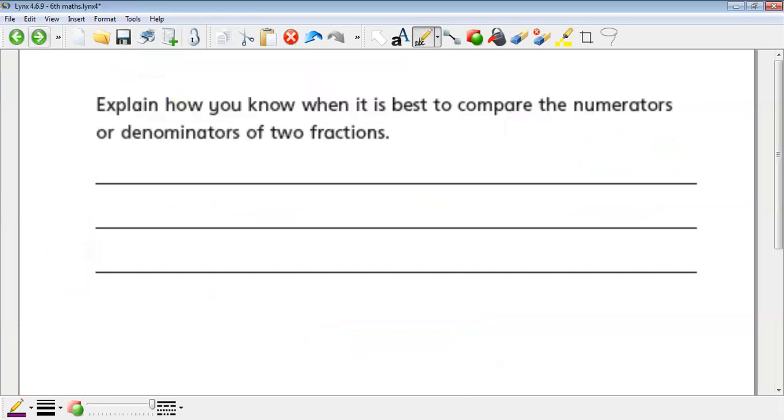Explain how you know when it's best to compare the numerators or denominators with two fractions. So if the numerators are the same, you can compare the denominators. For example, let's make our numerators the same and our denominators different. You can simply look at the smaller denominator. When our denominators are the same and our numerators are different, then it's going to want to keep the one with the numerator that is larger. So we almost work up in opposite ways. I hope that was helpful for you and I'll see you soon.